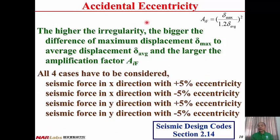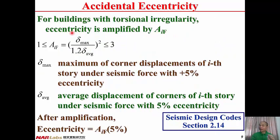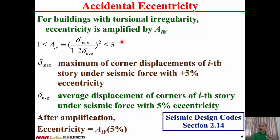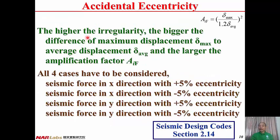If there is no eccentricity, under seismic force there is no torsion, so delta maximum may be very close to delta average, and Aif is less than 1. But we have a minimum value for Aif, so we can just use 5% accidental eccentricity. If the building is so irregular, delta maximum may be much larger than delta average, and Aif may become larger. There is an upper bound for Aif equal to 3. Therefore, the higher the irregularity of the story, the larger the amplification factor Aif.